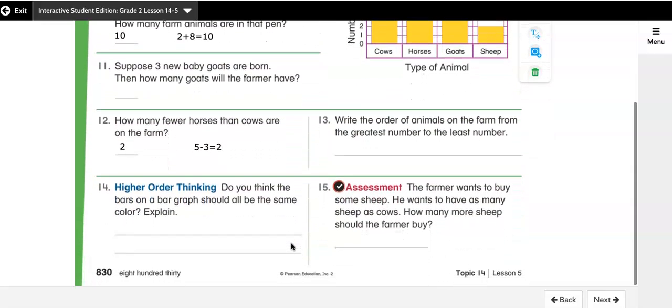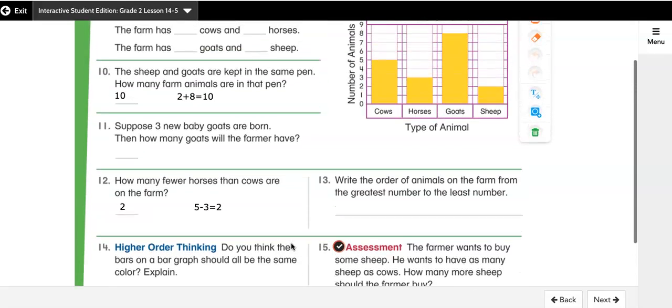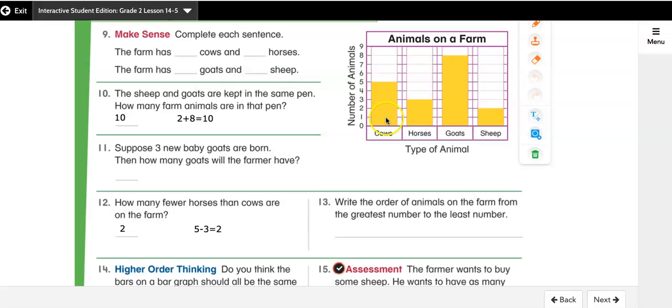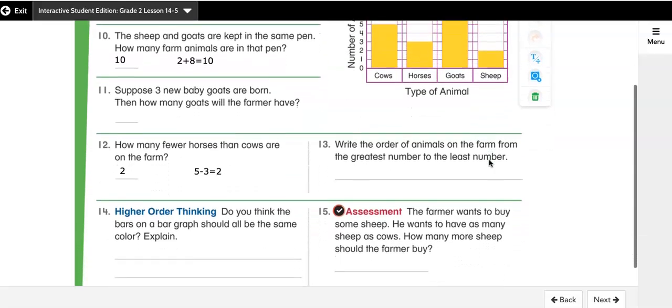Now, number 14 is a higher order thinking question. And I know I told you I was going to do the evens, but this one is an opinion question. So I'm going to leave it for you to do as well. It says, do you think the bars on a bar graph should all be the same color? Explain. There's really no right or wrong answer to this. It has to do with what you think. So most of the graphs we've been looking at today, all the bars, for instance, on this one are yellow. Do you think it would help you if cows were blue and horses were green and goats were yellow and sheep were orange? Or do you like that they're all the same color? So number 14, I'm going to leave for you to do because it's an opinion question.